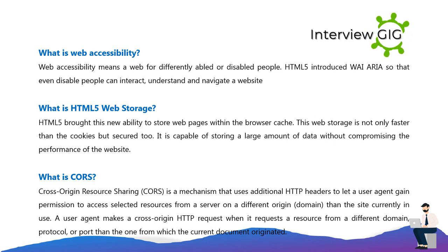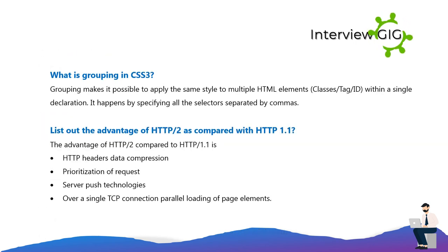Cross-Origin Resource Sharing (CORS) is a mechanism that uses additional HTTP headers to let a user agent gain permission to access selected resources from a server on a different origin domain than the site currently in use. A cross-origin HTTP request occurs when a resource is requested from a different domain, protocol, or port than the one from which the current document originated. CSS3 grouping makes it possible to apply the same style to multiple HTML elements (classes/tags/IDs) within a single declaration, by specifying all selectors separated by commas.